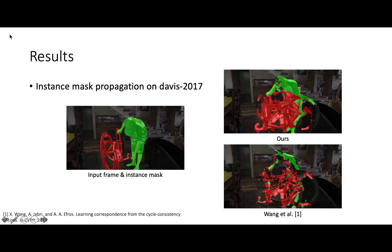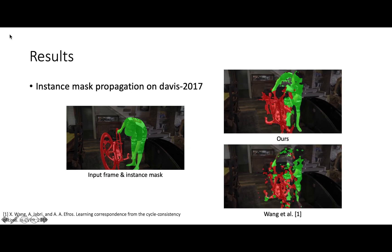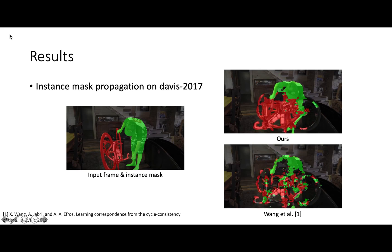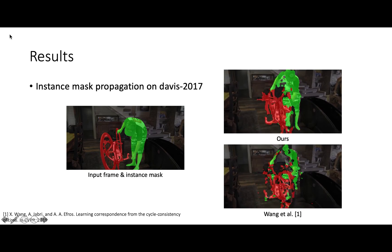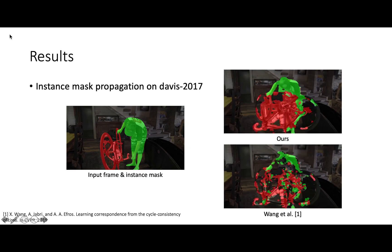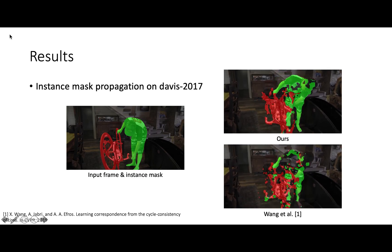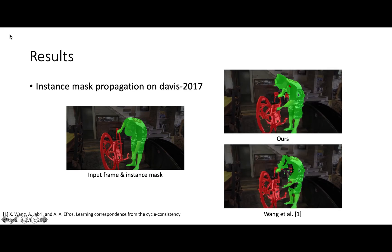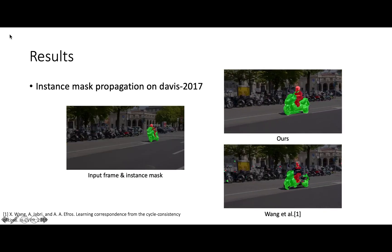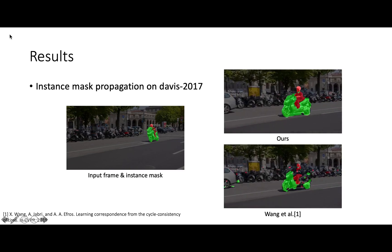For evaluation, we use the learned affinity matrix between consecutive frames to propagate various information from the first frame to the rest of the video. Here we show the propagation of instance segmentation masks on the Davis 2017 dataset, where the initial masks of the two object instances are provided at the first frame.